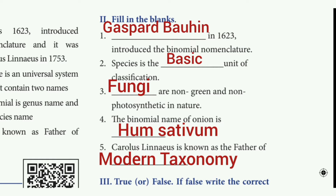Third fill in the blank: blank are non-green and non-photosynthetic in nature. The answer is fungi. Fourth: the binomial name of onion is blank. The answer is Allium cepa. Fifth: Carolus Linnaeus is known as the father of blank. The answer is modern taxonomy.